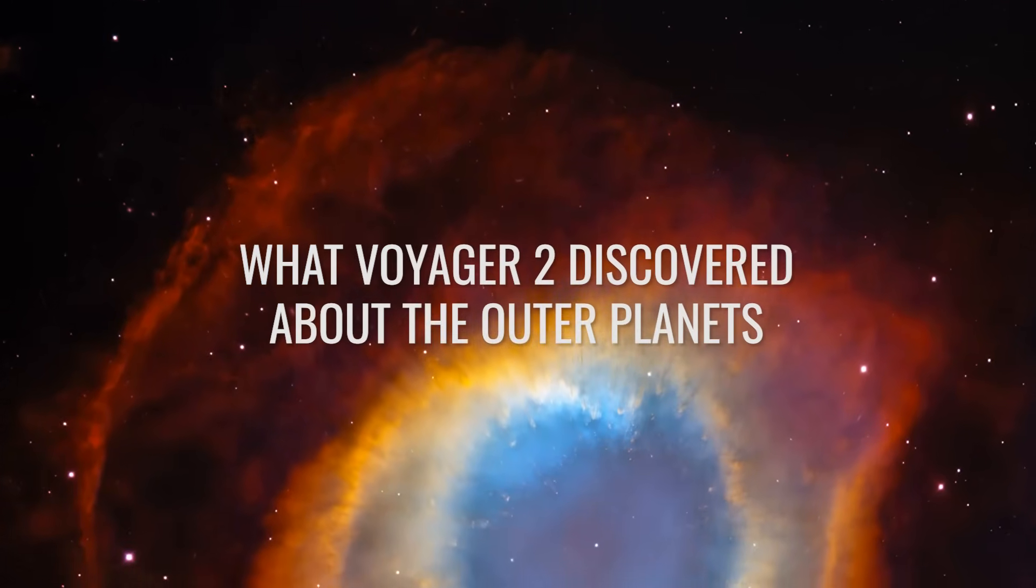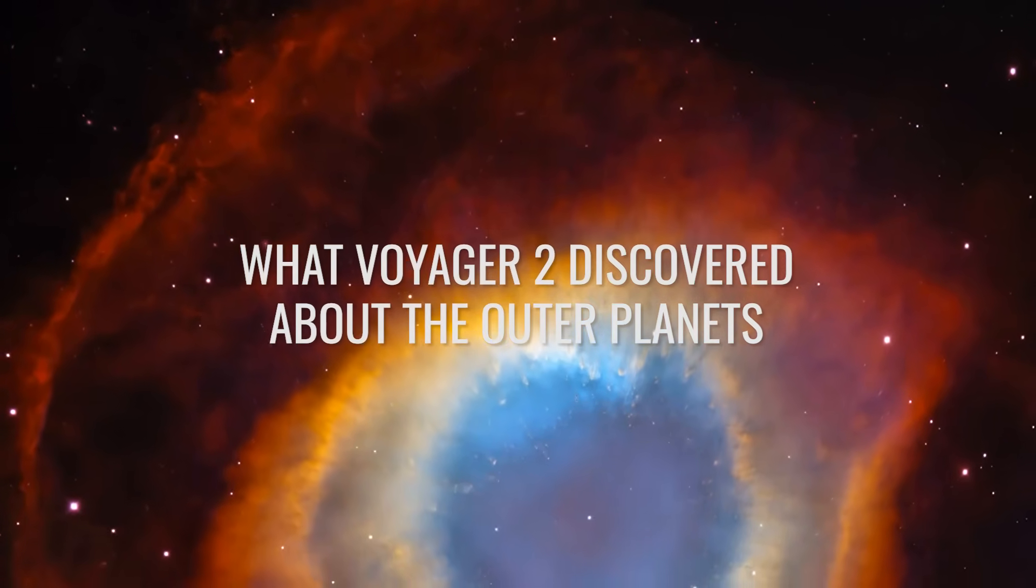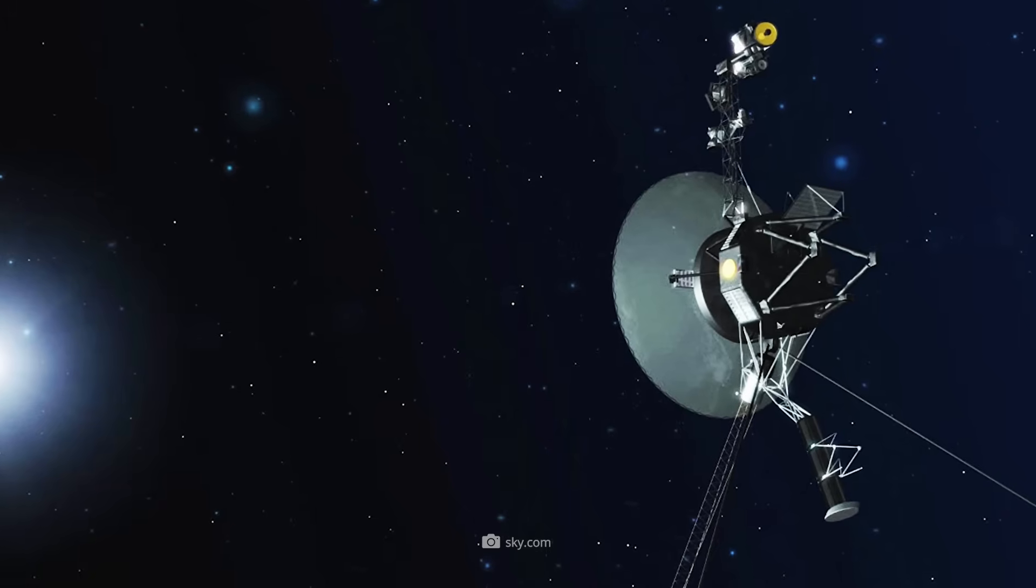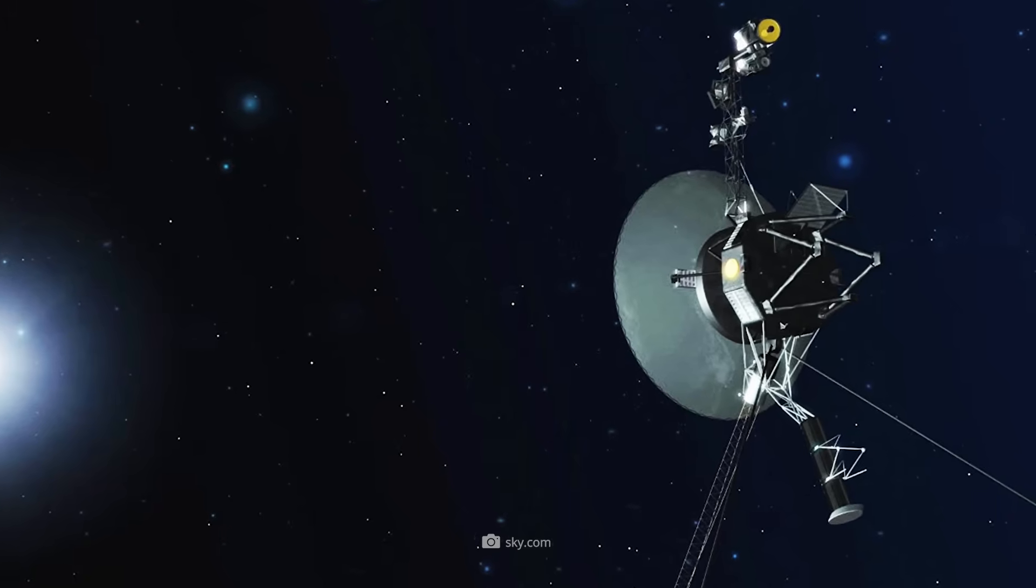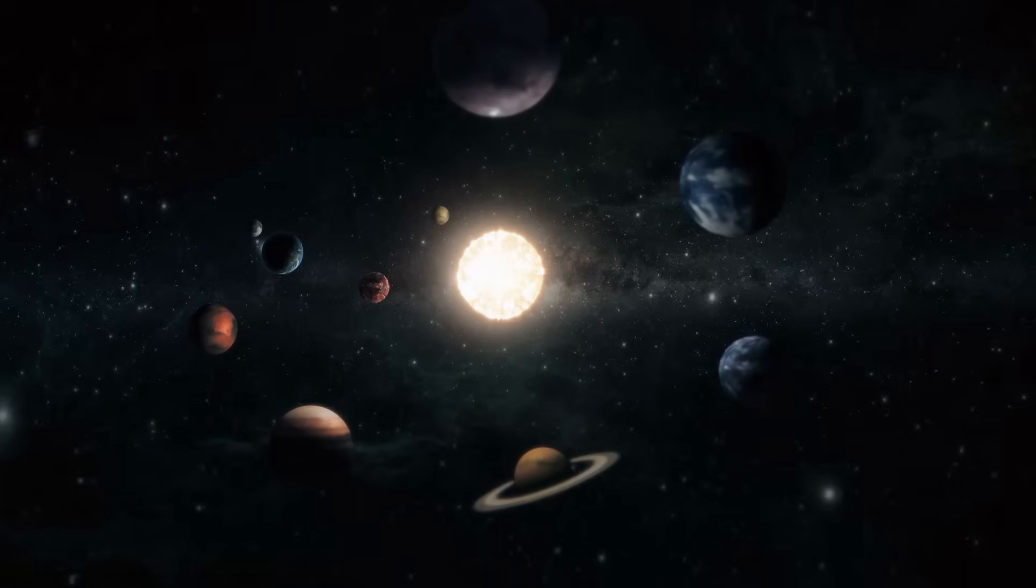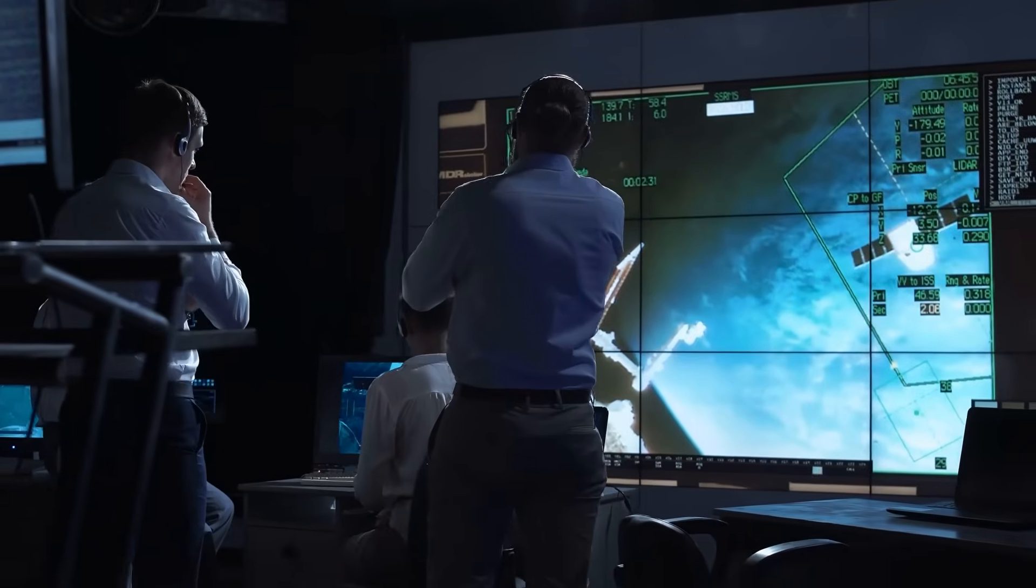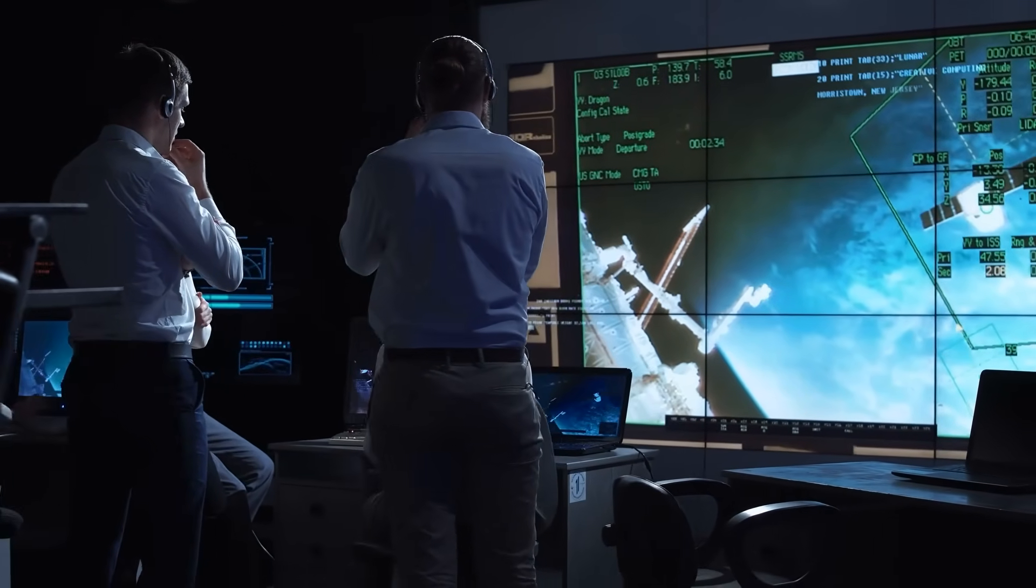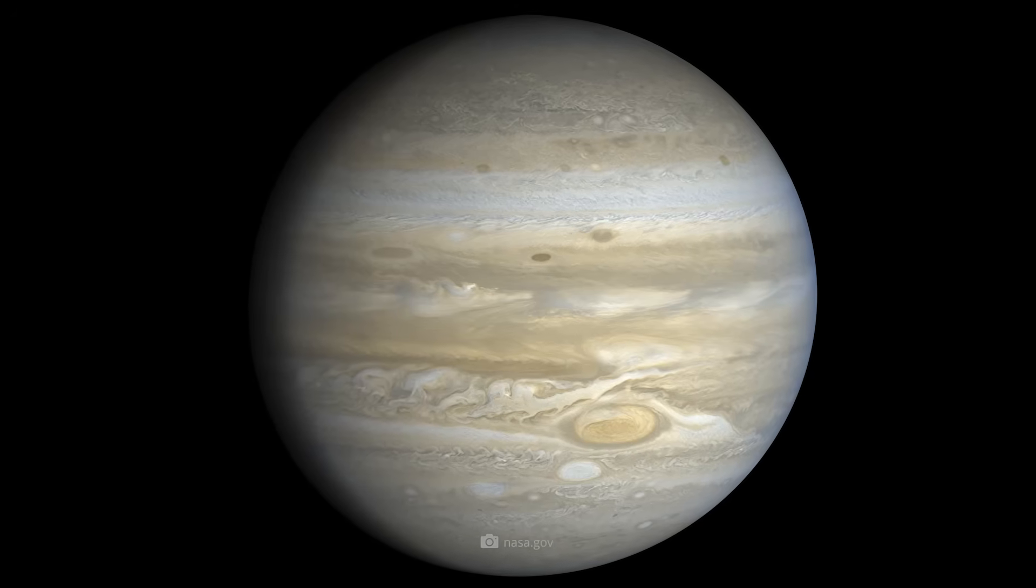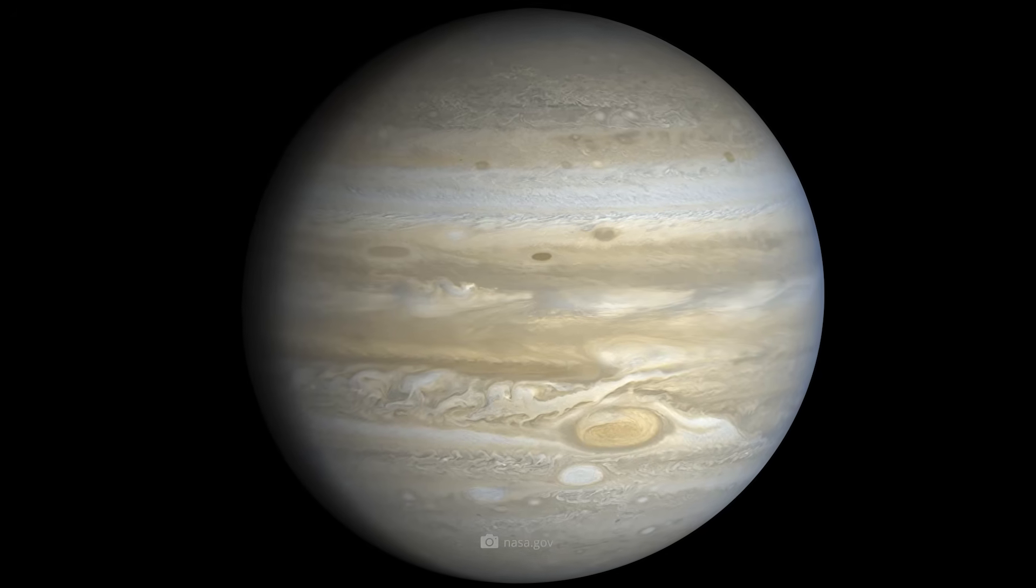What Voyager 2 discovered about the outer planets? As mentioned above, the two probes were actually only sent into space to gather new information about the then-largely-unexplored outer planets of the solar system. But that's not all. The original mission duration was only five years. Well, how wrong can you be? But first, it all began with mighty Jupiter.